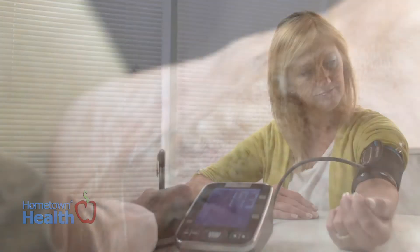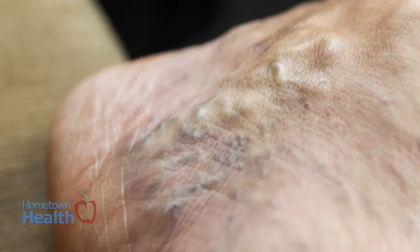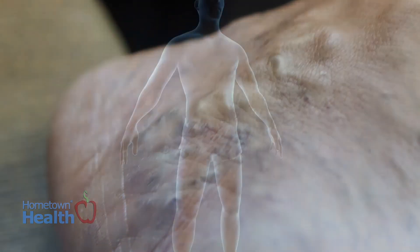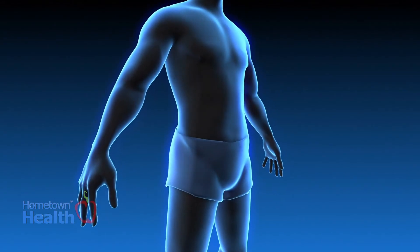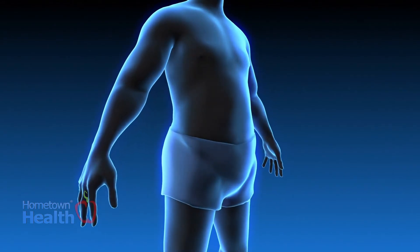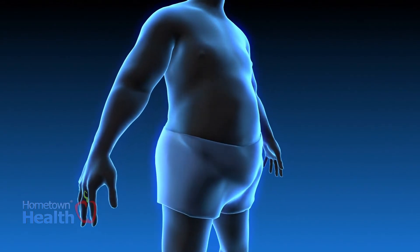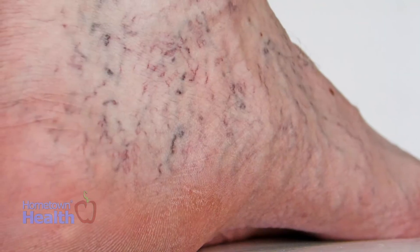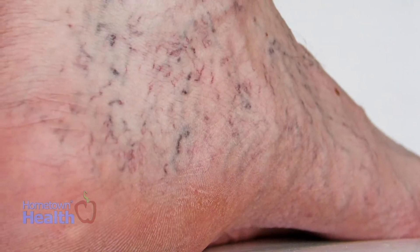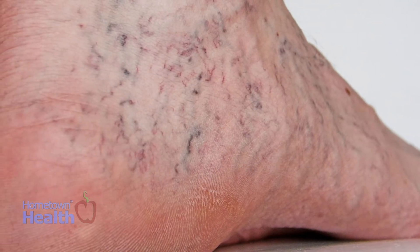One of the indicators of diabetes is high levels of sugar in the blood. Among other problems, this causes veins to weaken. It can also cause weight gain, which is a risk factor for varicose veins. Advanced diabetes might result in nerve and tissue damage in your legs, where varicose veins are also most common.